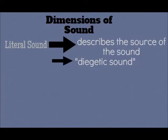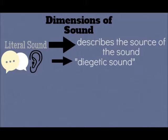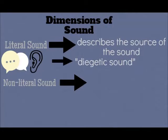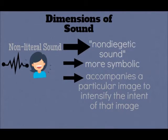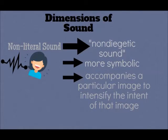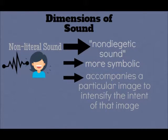For instance, when you hear the sound of a baby crying, you will know that this sound is coming from a baby who is crying, and even if the sound is muted, you will still associate the image of a baby crying with the sound that is produced when you see such a scene. Number three is non-literal sound: it is the sound that may be non-referential and may only evoke a visual image of the source. Non-literal sound is also called non-diegetic sound. Its purpose is more symbolic and it accompanies a particular image to intensify the intent of that image. Examples include boyings, hisses, romantic music, and the thematic music that can introduce the evening news.